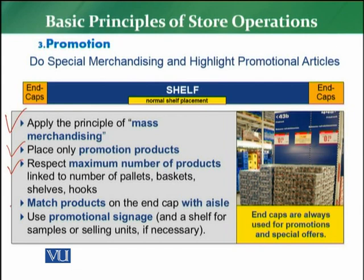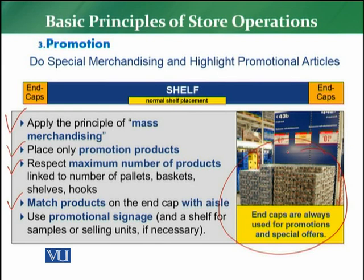You should match the product on the end cap with the aisle. If the family of products is in the aisle, you can match the main aisle product with the end cap. If grocery products are in the main shelf, match them with the main end cap or head shelf. The principle is that products placed on the end cap should match the products in the corresponding aisle.